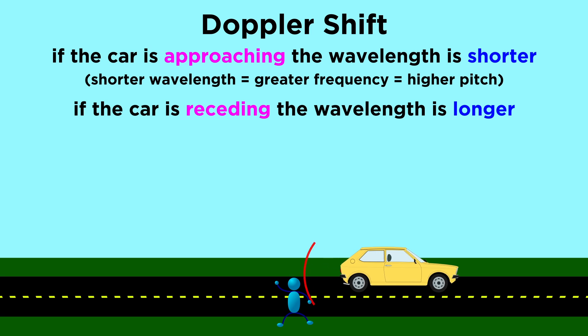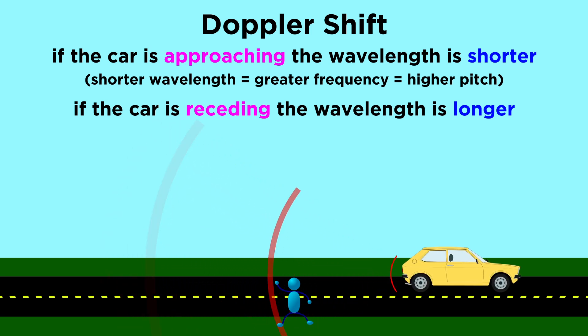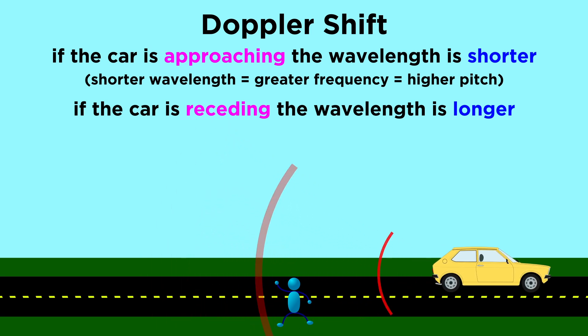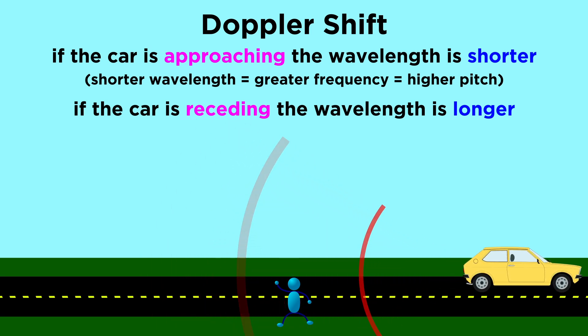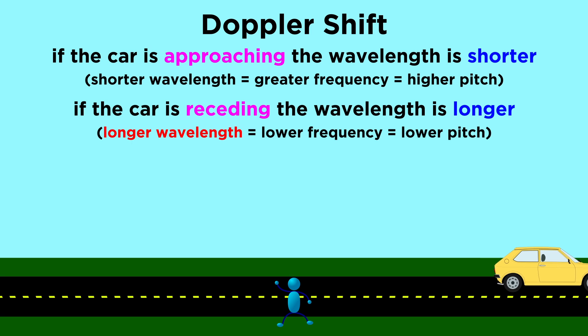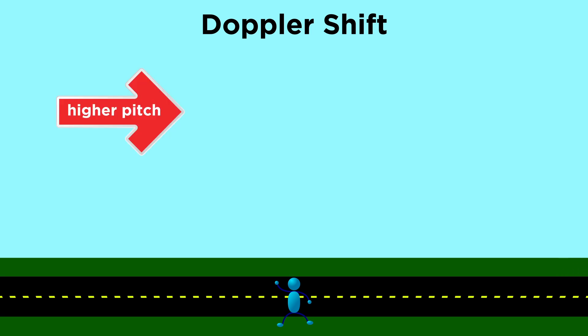Once the car passes and is moving away, the wavelength will increase, because the car will travel some distance away from us in between the emission of each wave. A longer wavelength means a lower frequency, and we will hear the sound as being pitched down. Higher pitch coming towards us, lower pitch moving away from us, and that's why a vehicle passing by will sound like this.